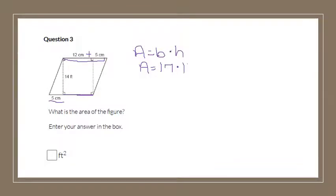And the height is 14. You can use your calculator to multiply those. 17 times 14. And that gives me 238. We always have to have our units. So feet squared.